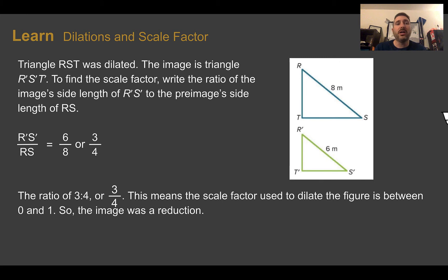Here we have another picture where triangle RST was dilated. The image here is R'S'T'. To find the scale factor, we're going to write the ratio of the length of the image to the length of the pre-image. So here's 6 to 8, which can be reduced to 3 over 4. So the ratio is 3 fourths, meaning that is what the scale factor was. It is between 0 and 1. We reduced the size of our figure by multiplying everything by 3 fourths.